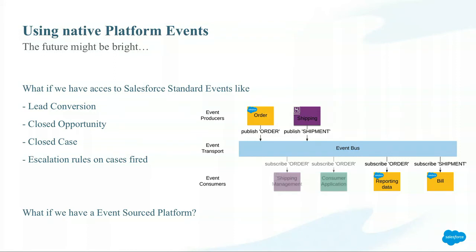An event-sourced platform would mean we're not looking at application state as our source of truth, but at the actual event log. One event-sourced system most people know is Git — you have the commit history, and if you replay it you get the application state. If we could get to that on Salesforce it would be very powerful. For example, with payroll: if there was a mistake six months ago, with an event-sourced system you can go back, add a corrective event, and replay all events to get to the current state.